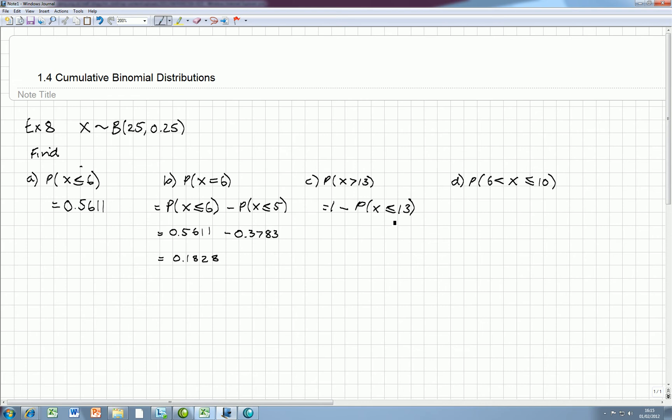And this is a result that we can get straight from the table. It's 0.9991. So that gives us an answer of 0.0009.